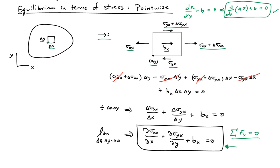I can continue with the argument and do sum of the forces in the y direction, and I'll get another partial differential equation. The rate of change of the xy shear stress with respect to x plus the rate of change of the normal stress in the y direction with respect to y plus the body force in the y direction equals zero.